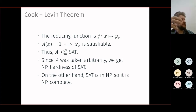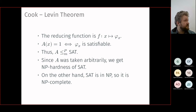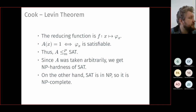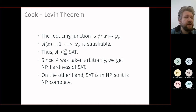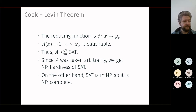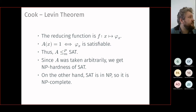Cook-Levin theorem has the following implication: if we have at least one hard problem in NP, SAT is one of them. We start with the conjecture — not yet proved — that there exist hard problems in NP, and we establish that SAT is one of them, being NP-hard. The basic idea of the reduction is that the witness is the protocol of a correct run of the Turing machine, encodable as a boolean formula. This shows that the language of boolean formulas is quite expressive.